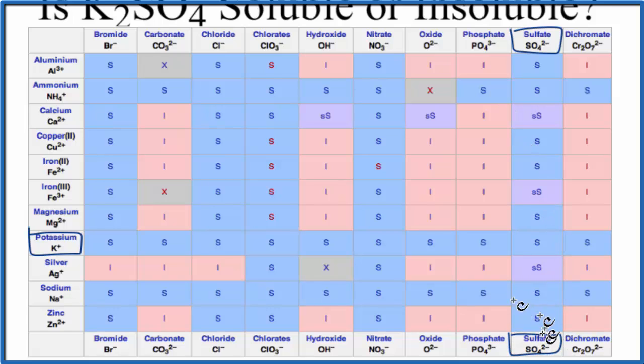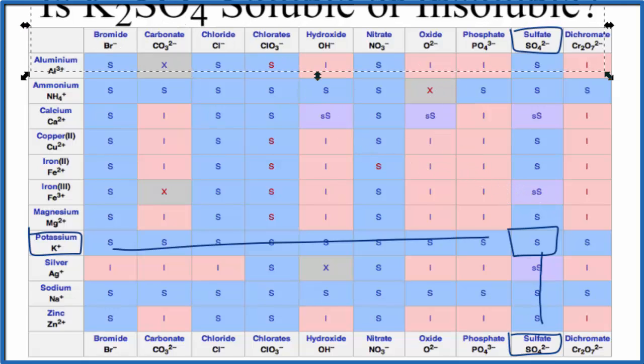Actually, we can look at it from down here, and we go up, and then we go over, and there's that S. That S means that it's going to be soluble in water. So K2SO4, it's going to be soluble in water.